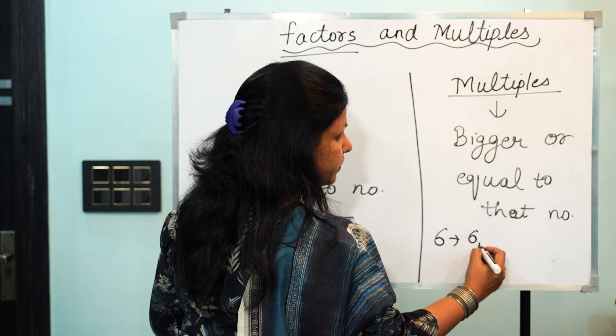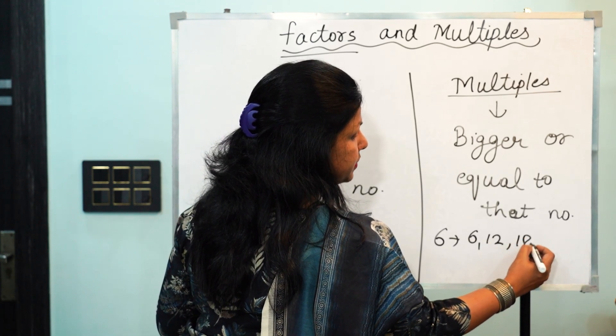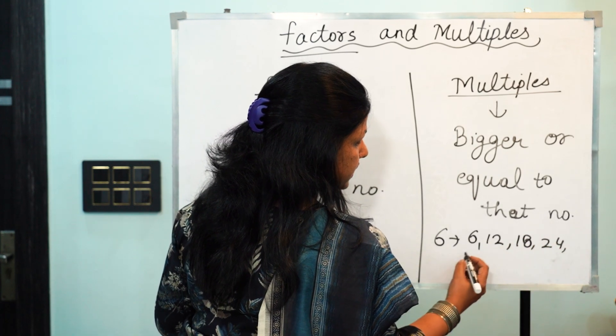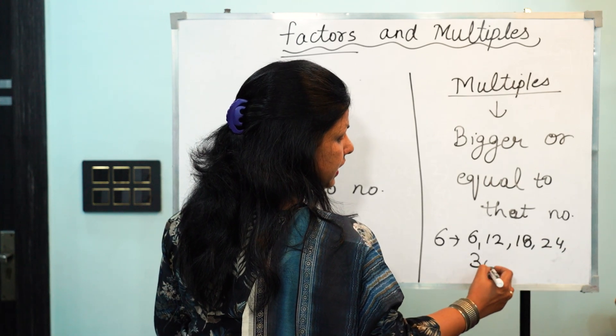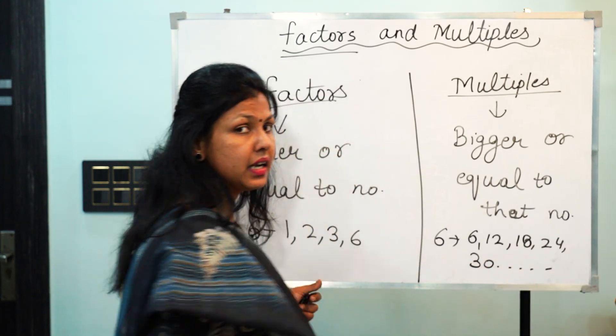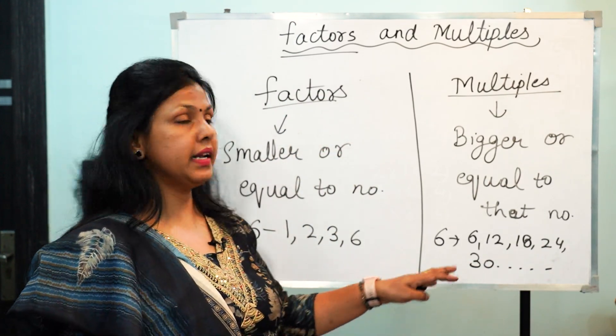If we talk about multiples of 6, then multiples of 6 will be the numbers that come in table of 6: 6, 12, 18, 24, 30 and so on. They are endless, they are unlimited. We cannot find an end to the multiples.